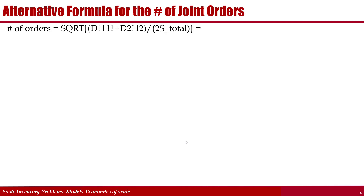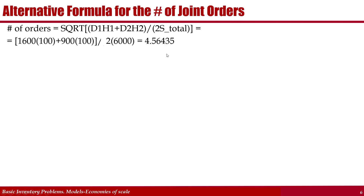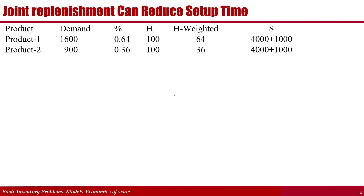We can use an alternative formula to find how to order. The number of orders N can be computed as: the square root of [demand of product 1 times its carrying cost plus demand of product 2 times its carrying cost, divided by 2 times the fixed ordering cost of ordering all together]. For example, if there were 10 products with $1,000 additional cost each, the denominator would be 2 times ($4,000 plus 10 times $1,000) = $28,000. Here with 2 products, it is 2 times $6,000. Demand of product 1 times its carrying cost plus demand of product 2 times its carrying cost, divided by 2 times $6,000, gives N = 4.56.